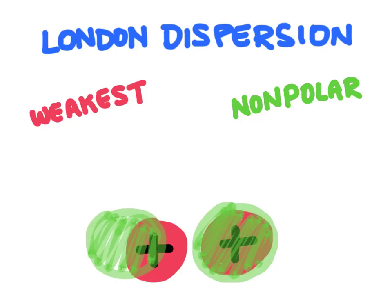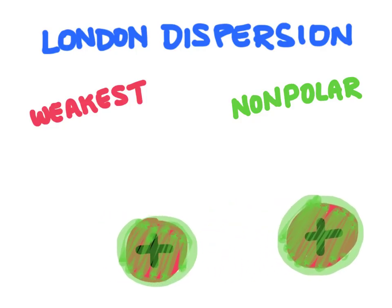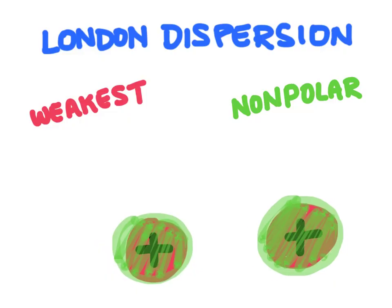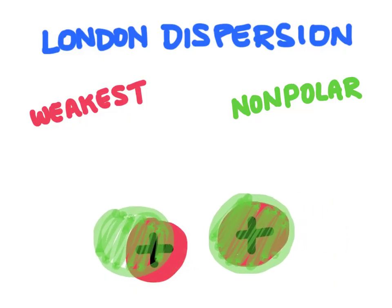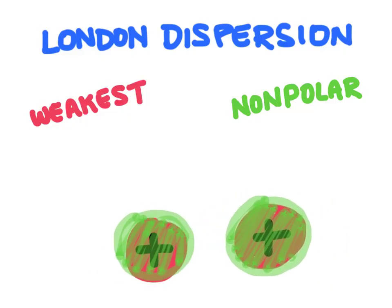As soon as those electrons move back, the molecule gets bumped back out. This is happening a lot — briefly exposing, bouncing back, briefly exposing, bouncing back — so we have this very weak attraction.